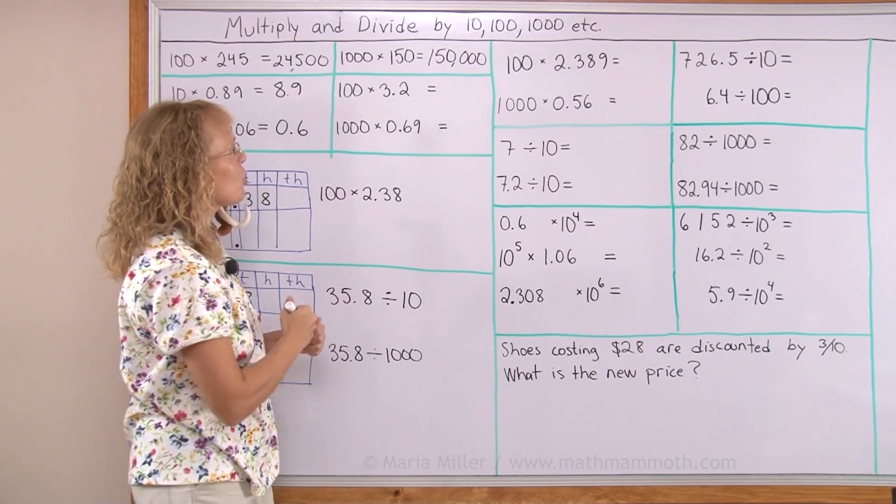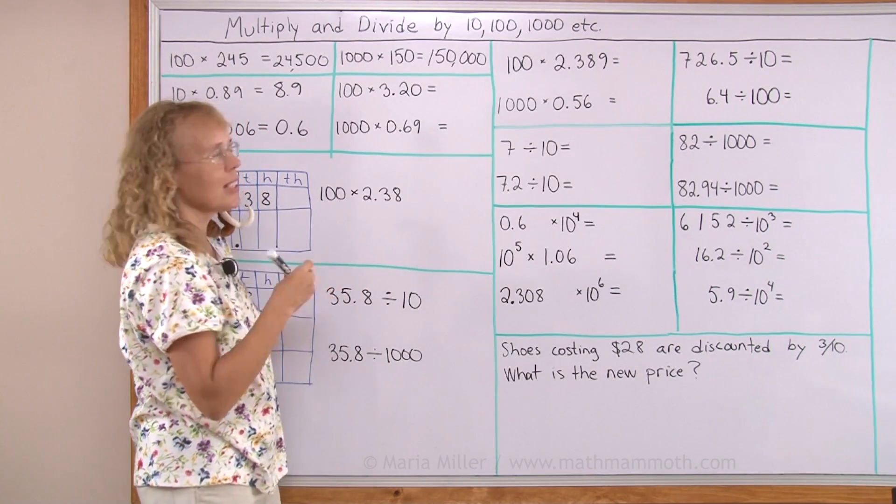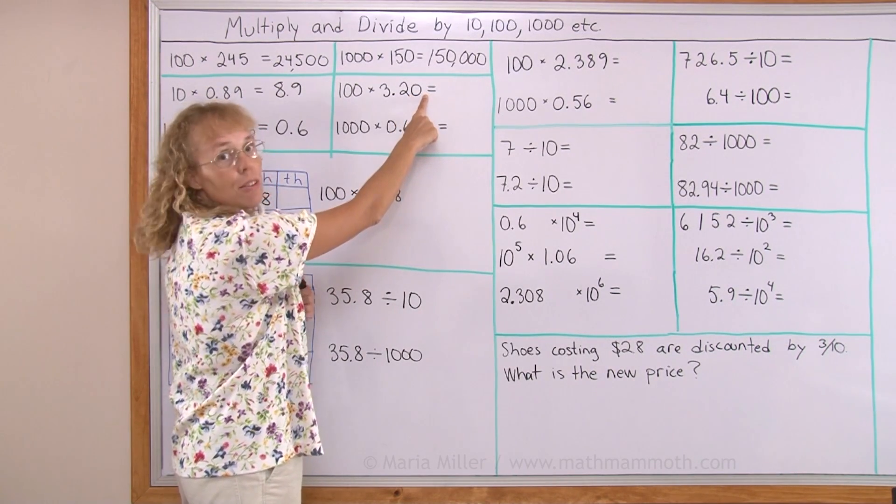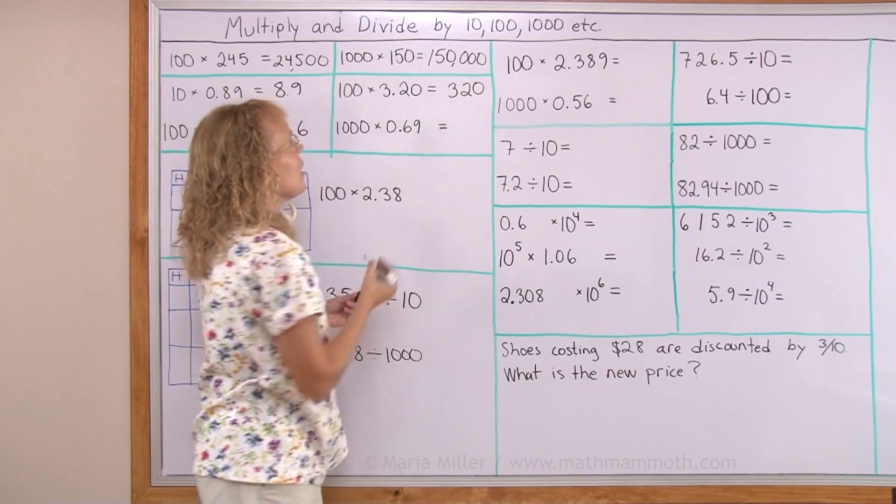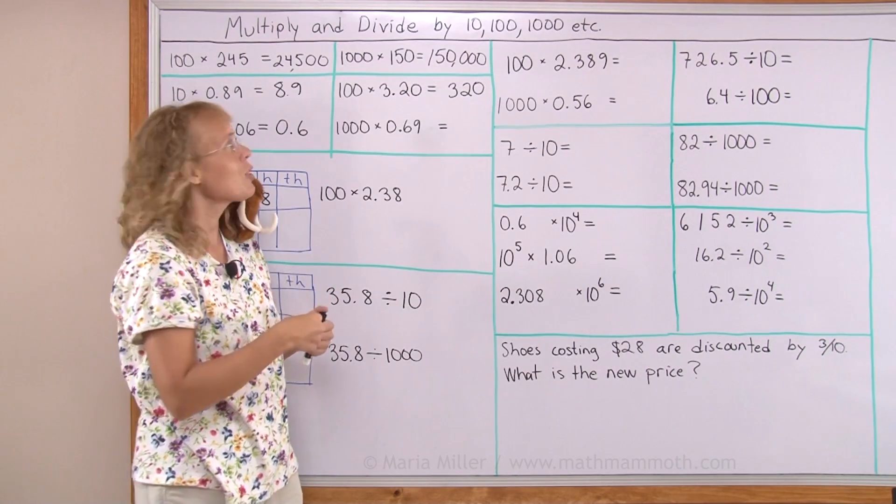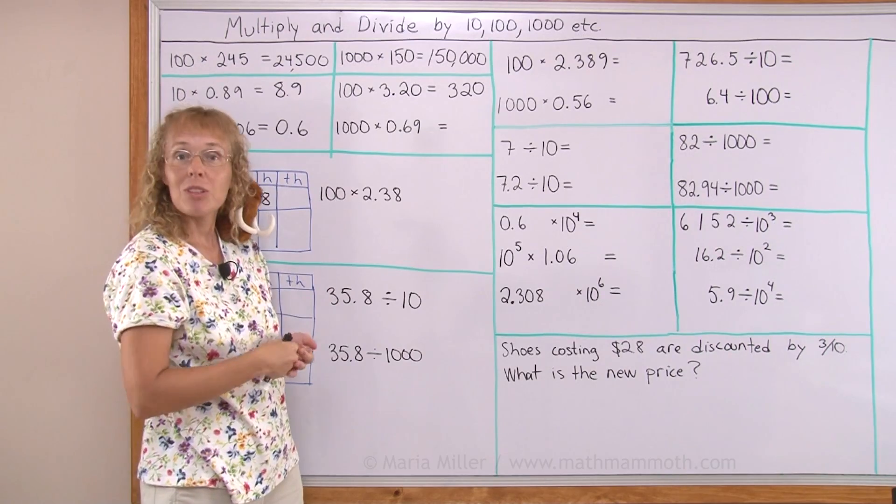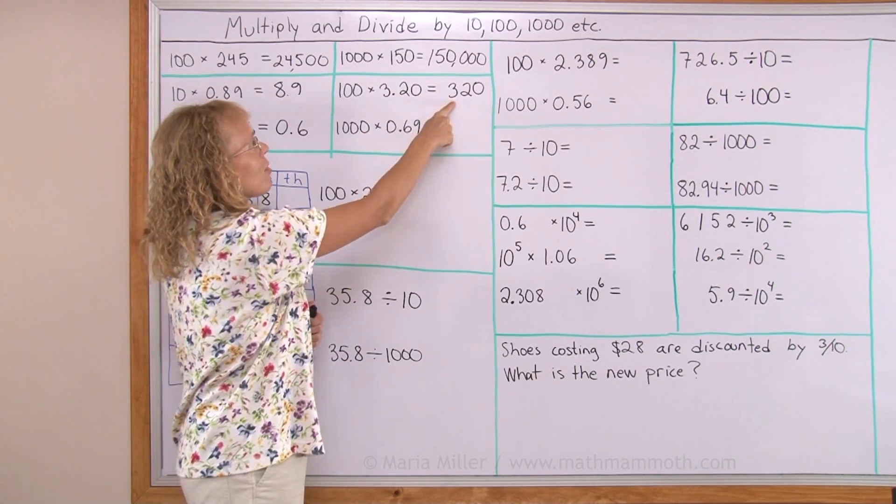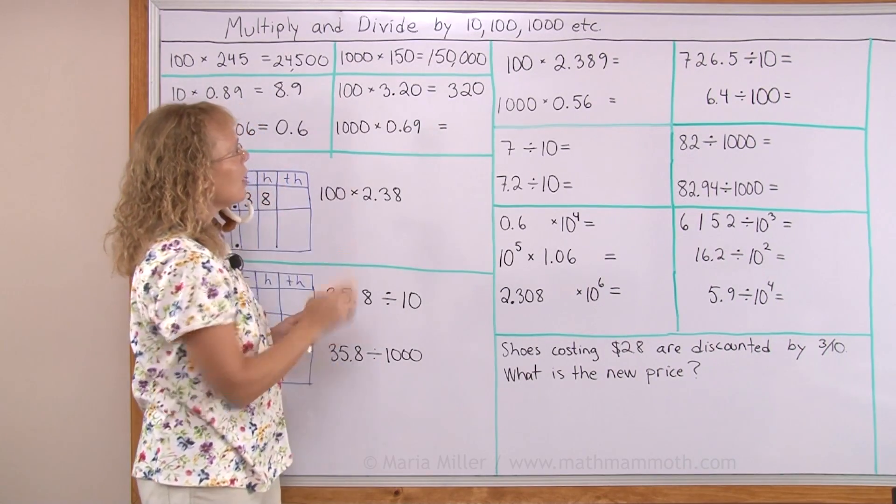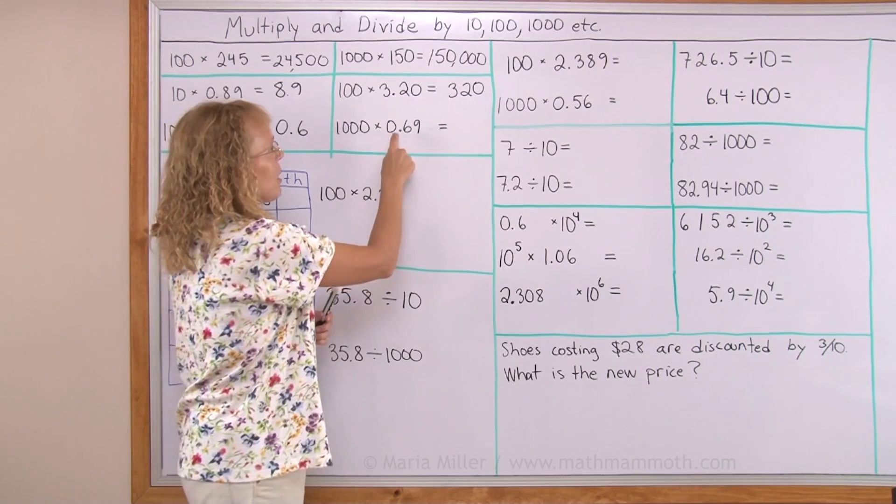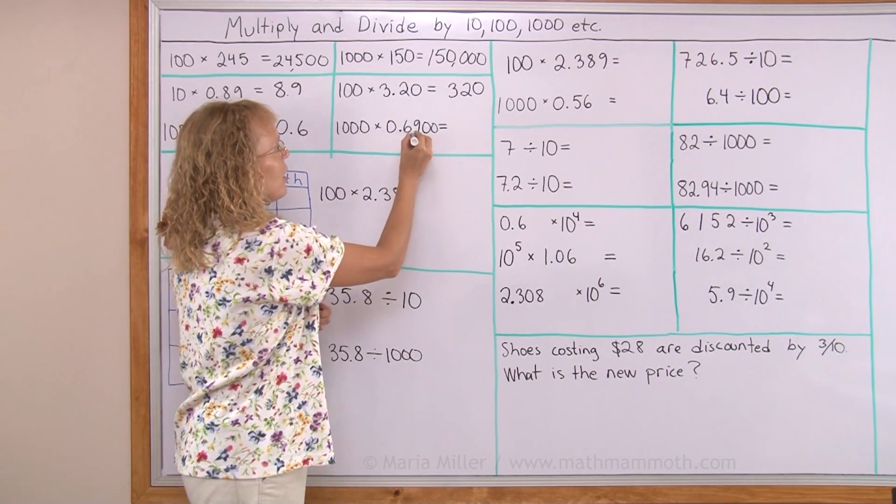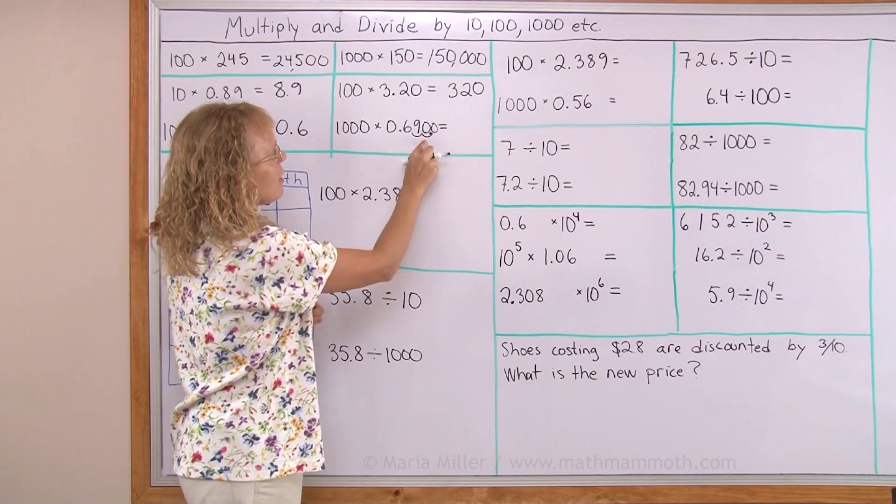But look, there is no number there. So to help myself, I can place a zero here to help me see how the decimal point moves. It moves here, this would be 32.0. It moves here, and it becomes 320. Over here, 1000 times 0.69. Again, when my decimal point starts moving, I can add some extra zeros here to help me move it. It would go here, 1, 2, and 3 over here. So 690.